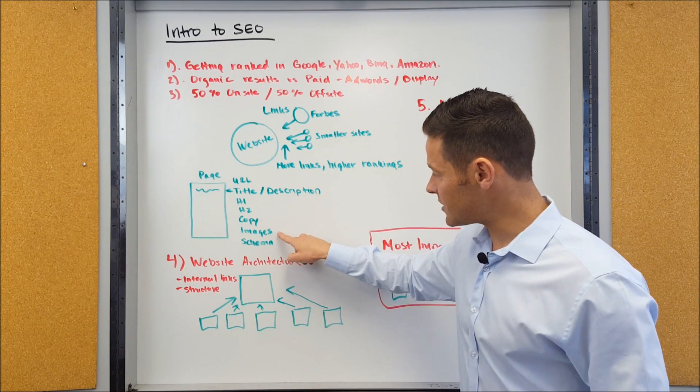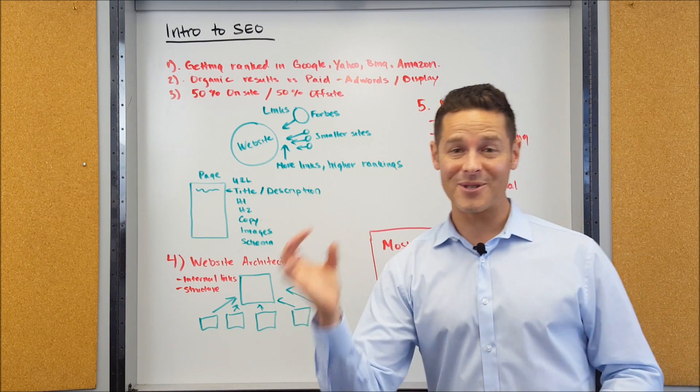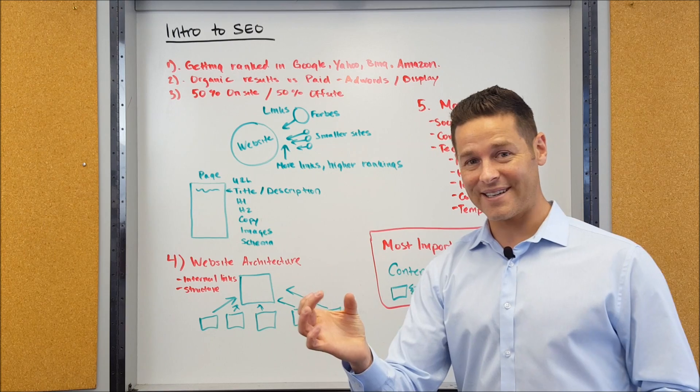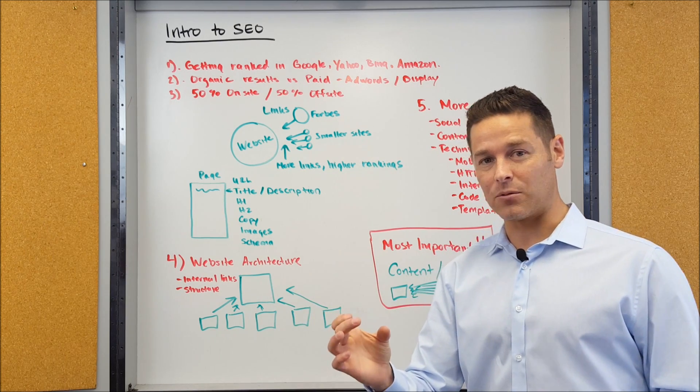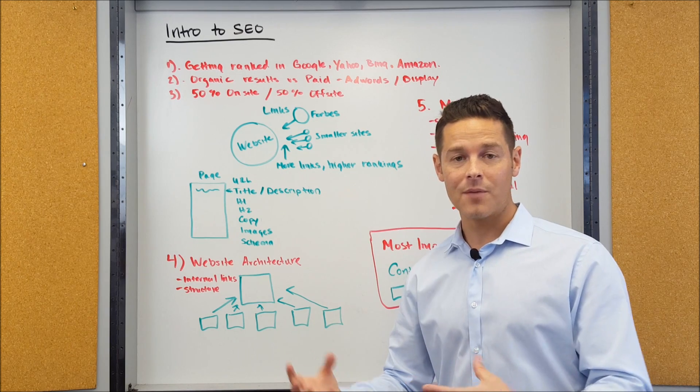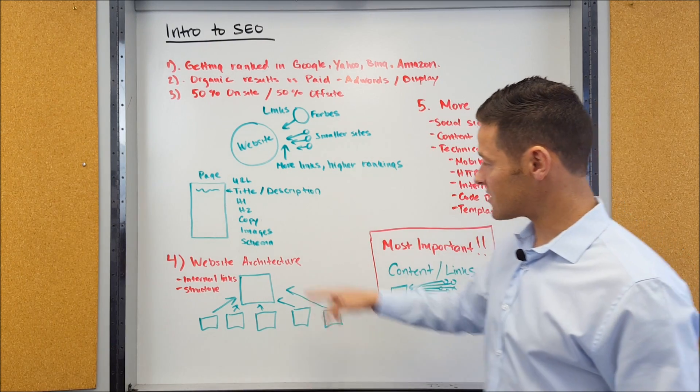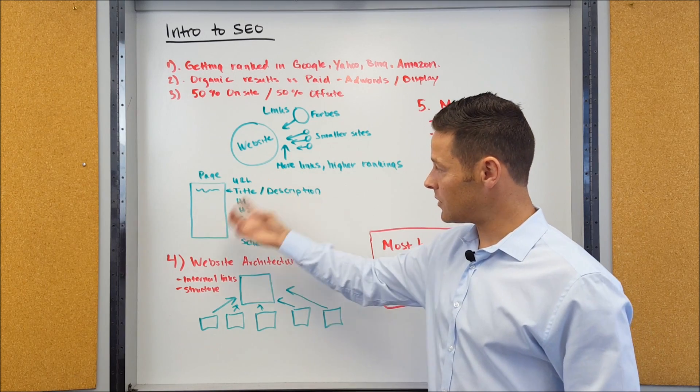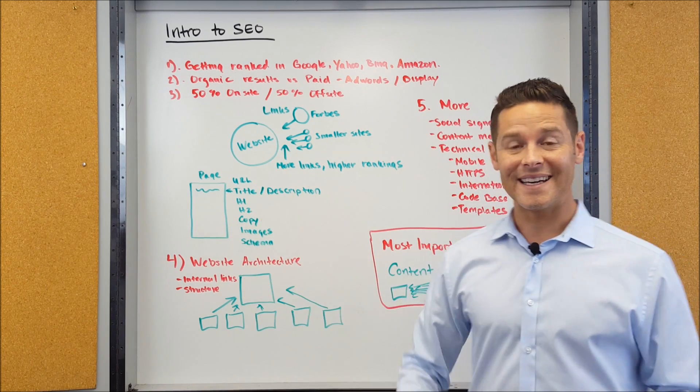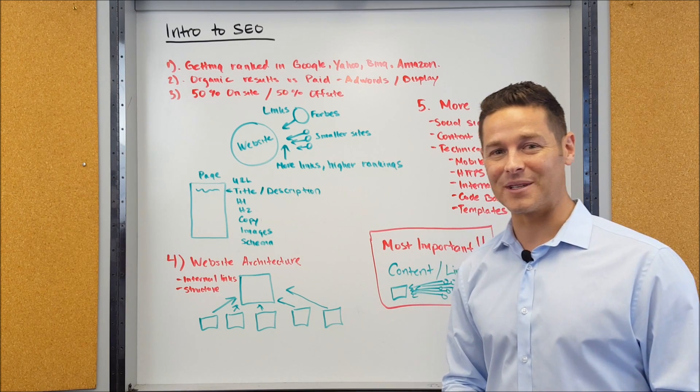And then also, what do the images look like on the page? Does the image file name say the keyword? Does the image alt text say the keyword? Does the image caption say the keyword? And does it do that in a natural way? So that's describing the image, but it also references the main keyword on the page. Also, there's something called schema.org that you can put inside of the code of your website and that tells the search engines what the website's about. We'll talk more about that a little bit later.